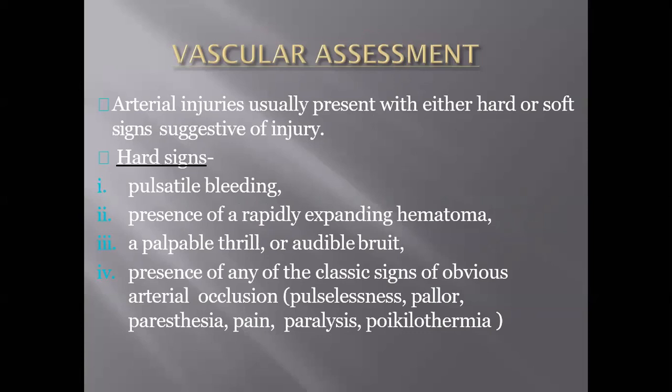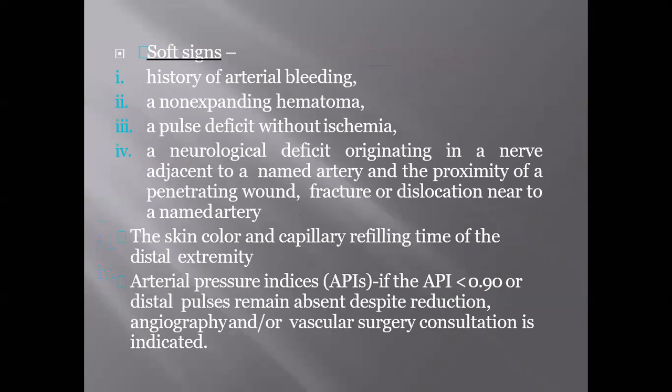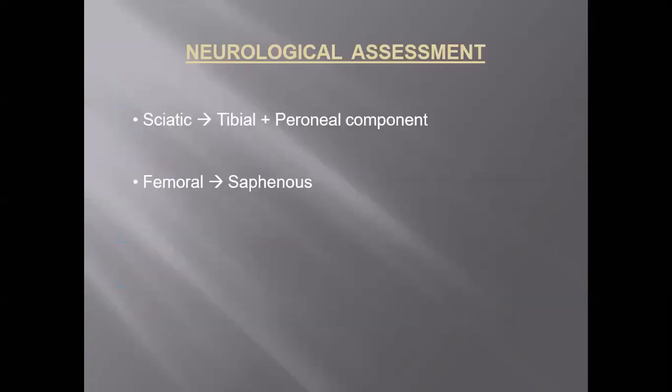Soft signs may or may not be associated with vascular injury. They are history of arterial bleeding, non-expanding hematoma, and pulse deficit without ischemia. Whenever vascular injury is suspected, vascular imaging must be obtained. Then we have to assess both sciatic and femoral nerve examination, and it has to be documented in the notes.